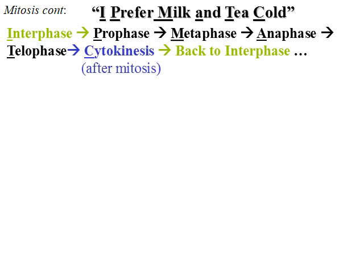Back to the mnemonic: 'I prefer milk and tea cold.' I is interphase, P is prophase, M is metaphase, A is anaphase, T is telophase, C is cytokinesis. Remembering that interphase and cytokinesis are not technically mitosis — they are part of the cell cycle, though, so it's good to know them. 'I prefer milk and tea cold,' and then the process repeats itself.